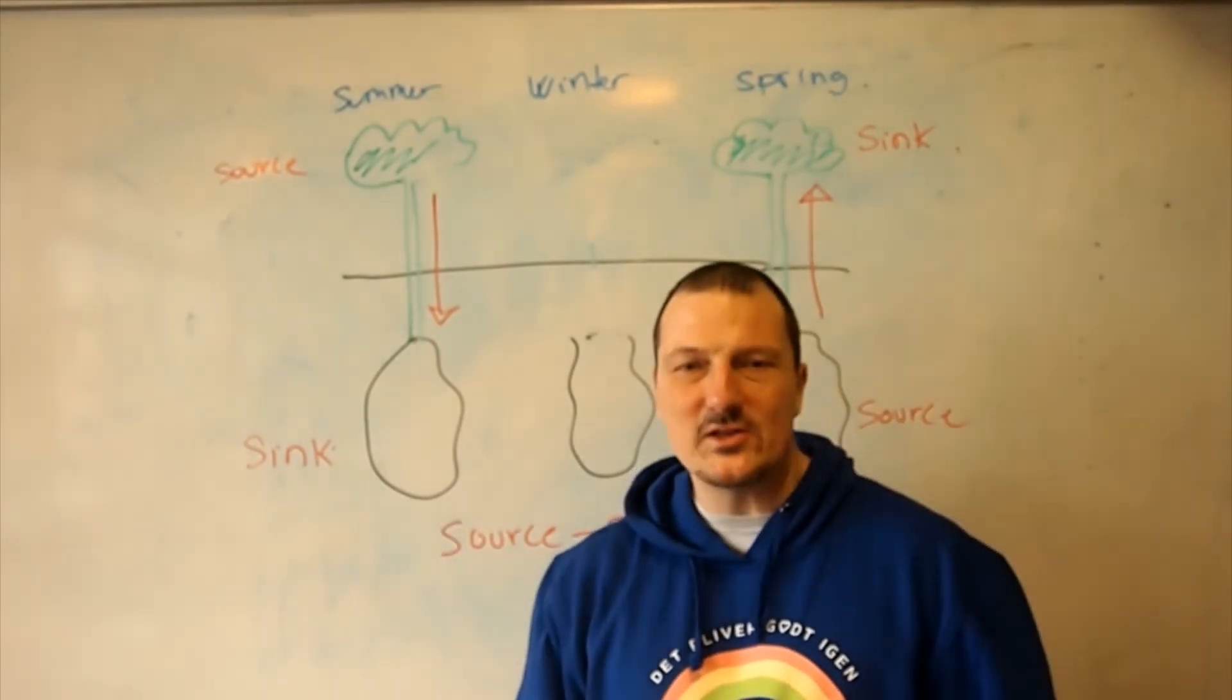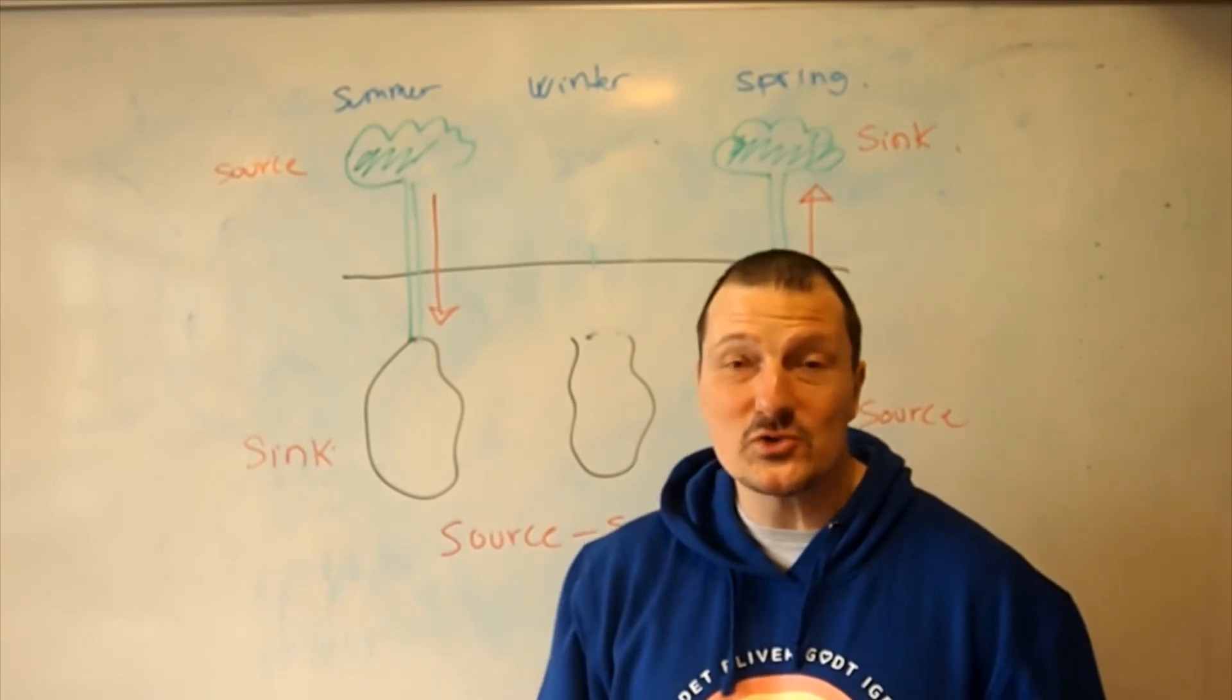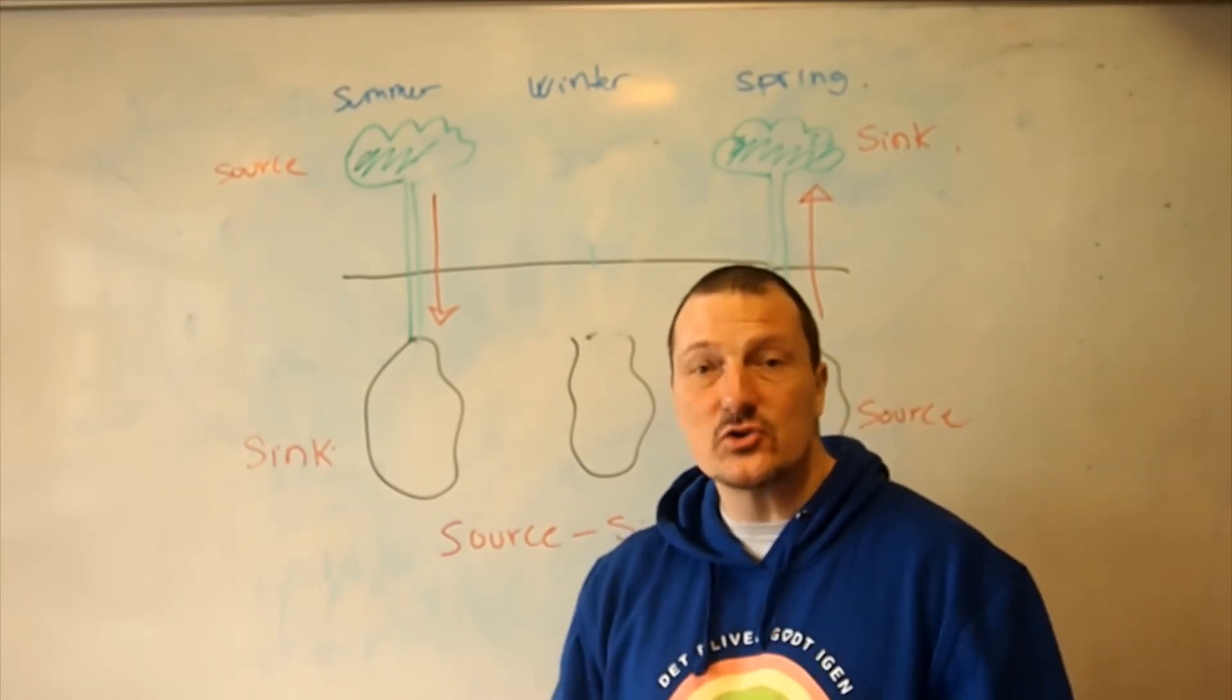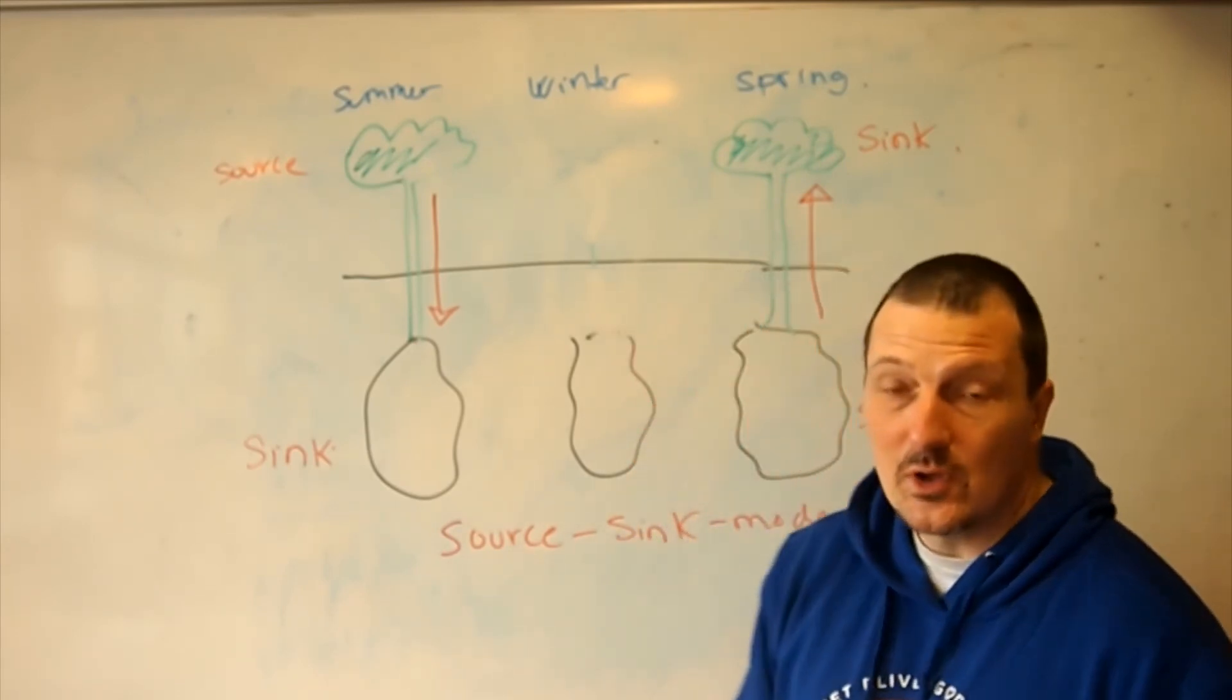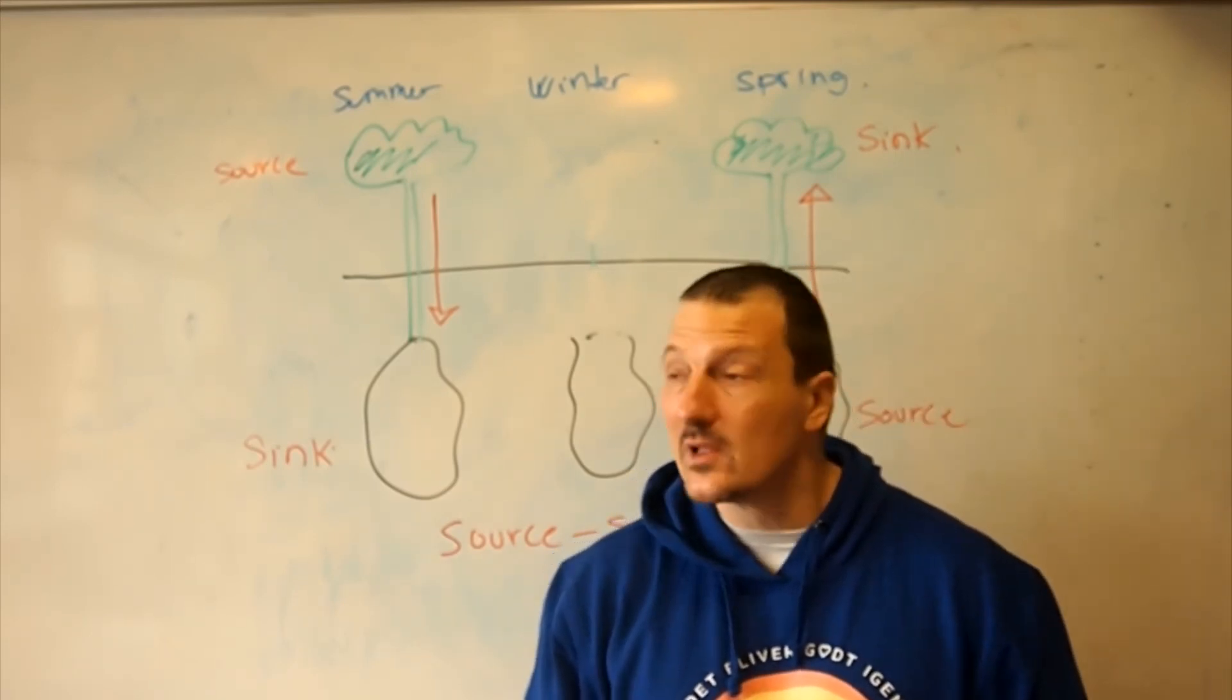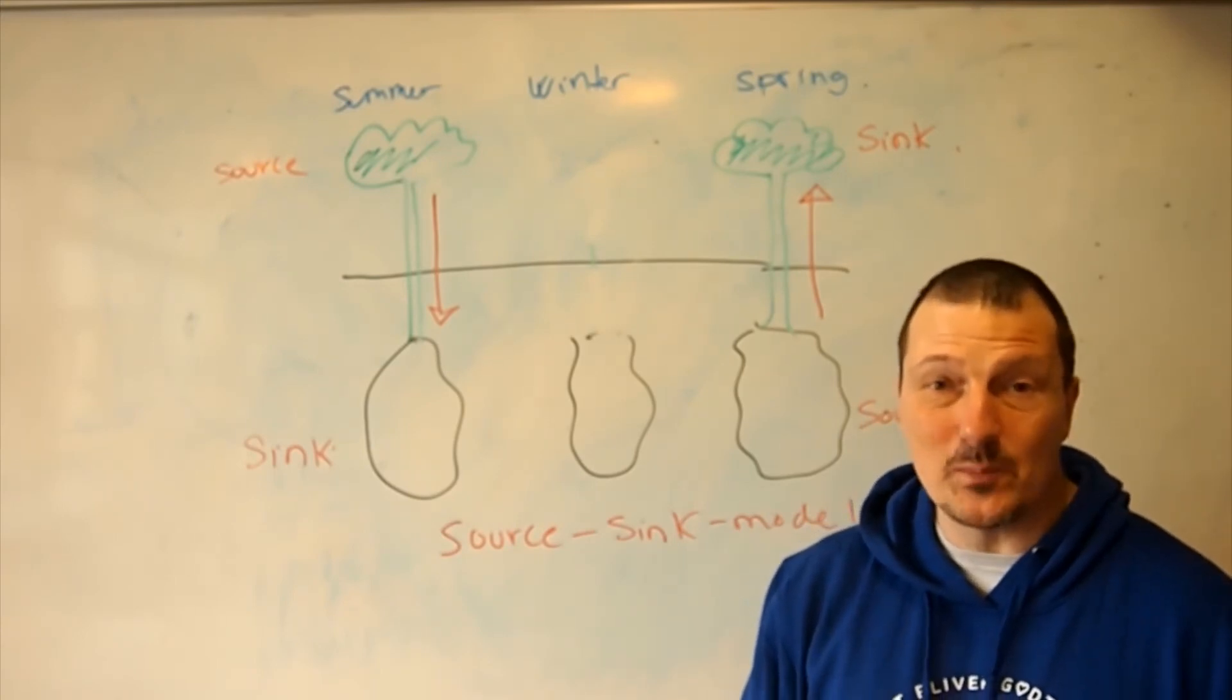So far we have mainly talked about the transport of water, but we also need to talk about the transport of amino acids, sugar, fats, the other nutrients inside the plant. And here we have to look at what I call the source-sink model. Here is a badly drawn picture of what could be a potato.